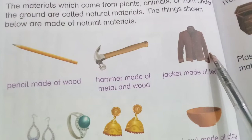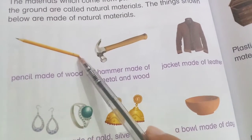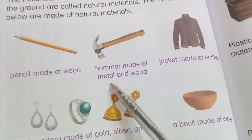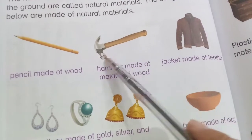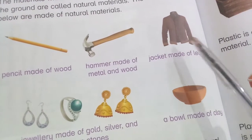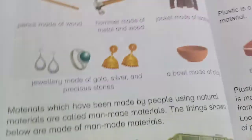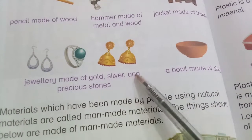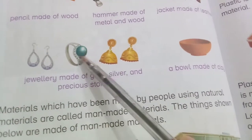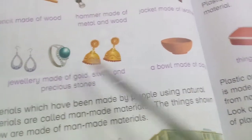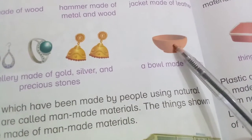Examples of natural materials: a pencil is made of wood — wood is a natural material. A hammer is made of metal and wood — metal is a natural material. A leather jacket is made of leather — leather is a natural material. Jewelry is made of gold, silver, and precious stones. A bowl is made of clay, which is also a natural material.